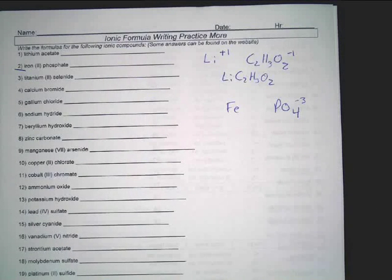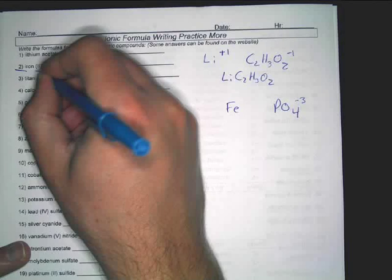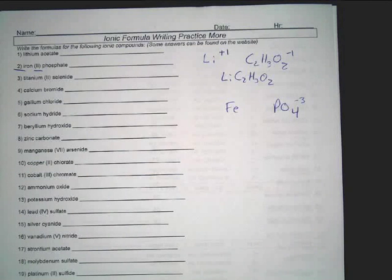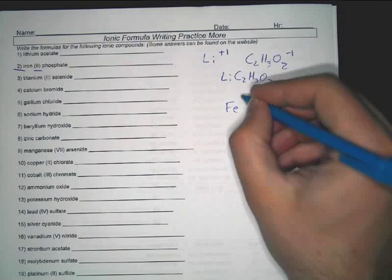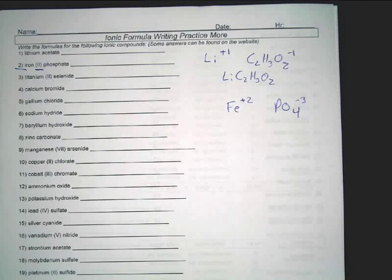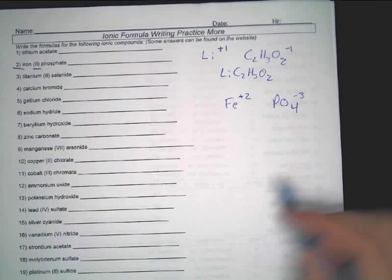Iron, and here's the thing, this Roman numeral right here, and this is a question a lot of you are going to ask me if you don't listen to this. Because that Roman numeral two indicates that this iron is iron two. That is, it has a positive two charge. That's what the Roman numeral tells you, is the charge on the transition metal it is after.